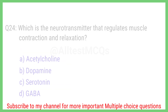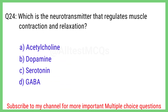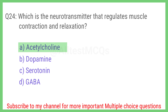Question number 24. Which is the neurotransmitter that regulates muscle contraction and relaxation? The right answer is option A. Acetylcholine.